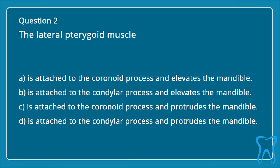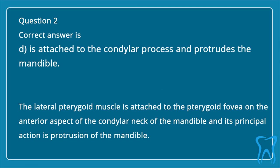Question 2. The Lateral Pterygoid Muscle. a. Is attached to the coronoid process and elevates the mandible. b. Is attached to the condylar process and elevates the mandible. c. Is attached to the coronoid process and protrudes the mandible. d. Is attached to the condylar process and protrudes the mandible. Correct answer is D: is attached to the condylar process and protrudes the mandible.